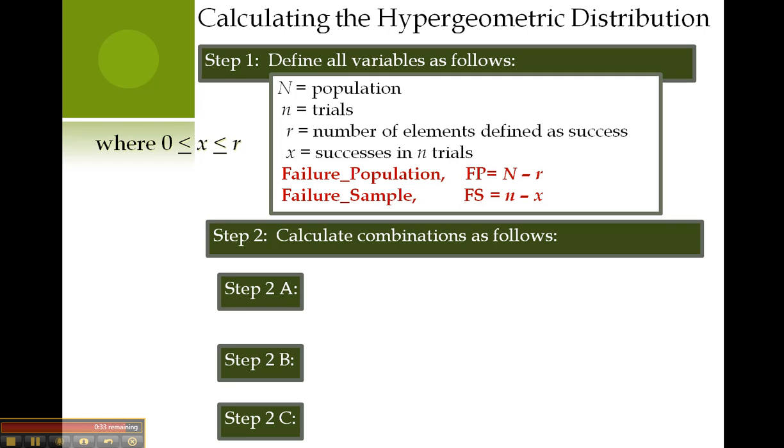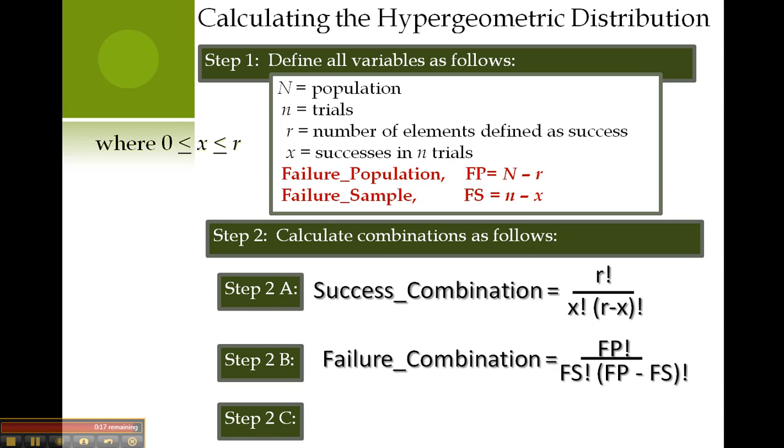Now, the formula requires that you calculate the combination, and it's easiest if you do that now. For example, calculate a success combination as follows. A failure combination as follows. And a population combination as shown.